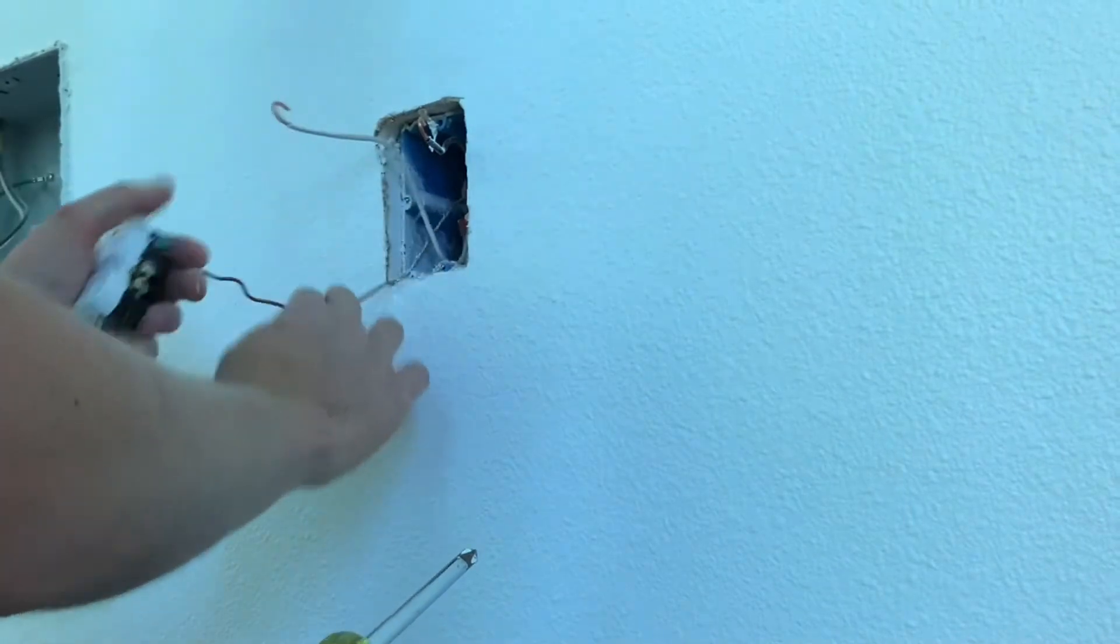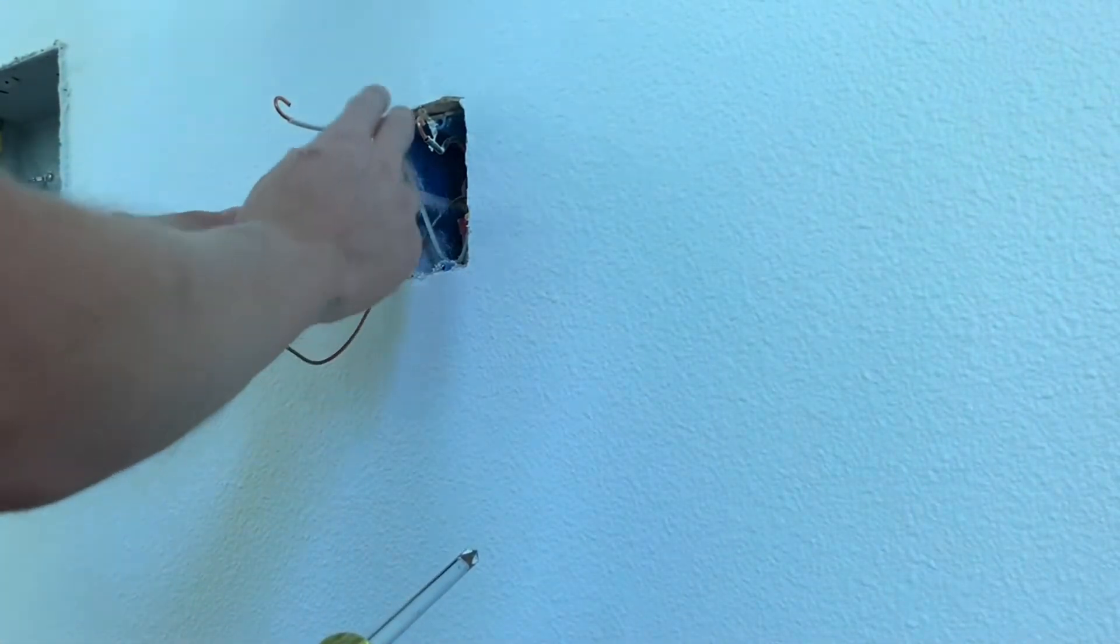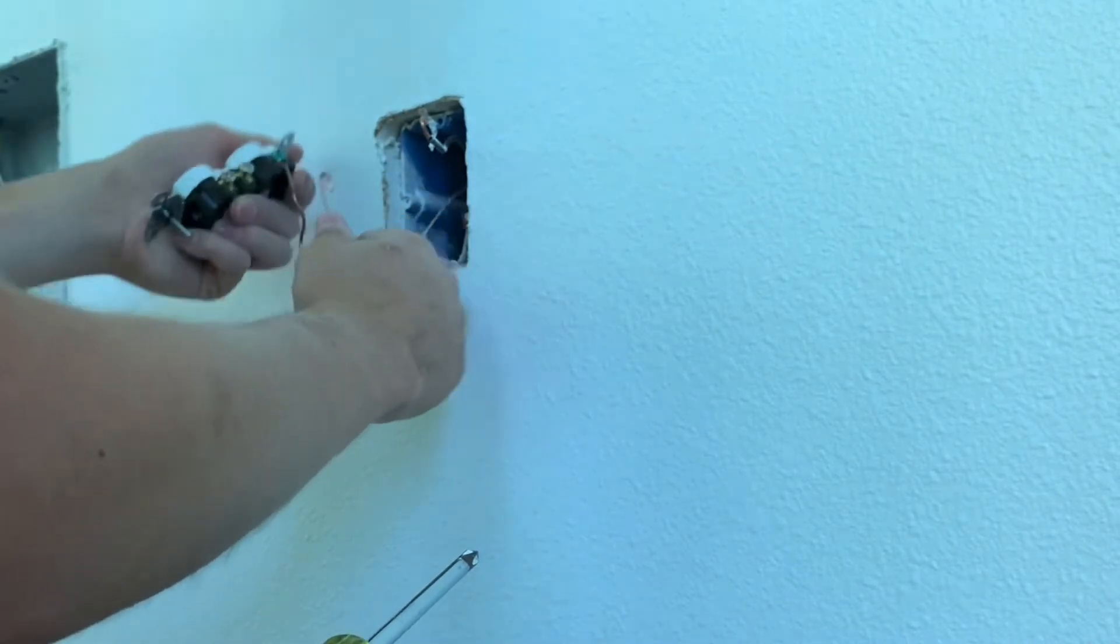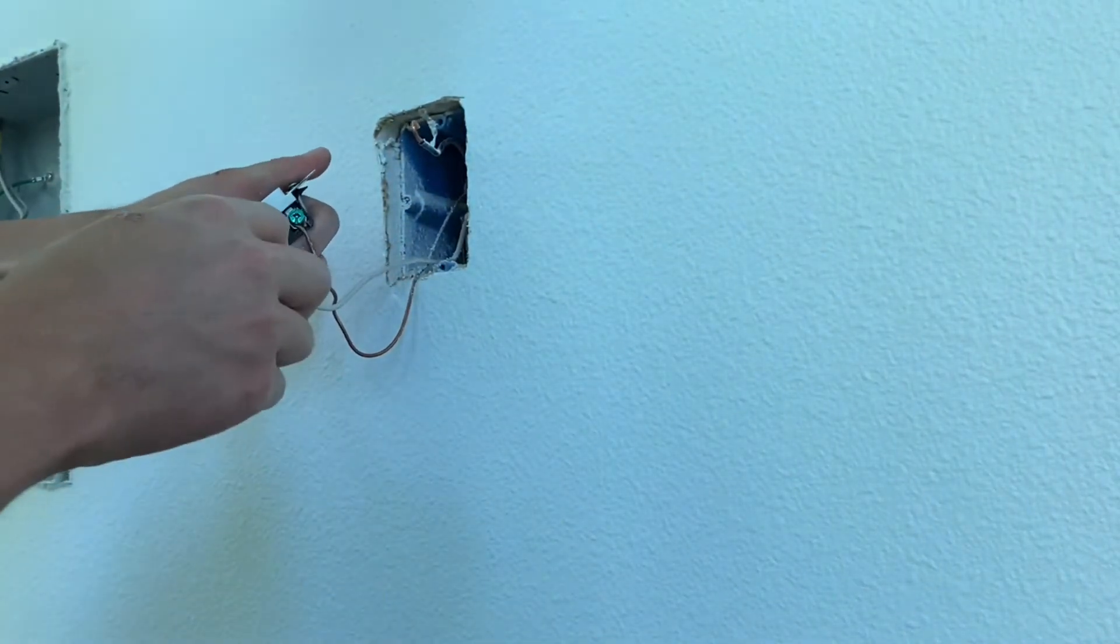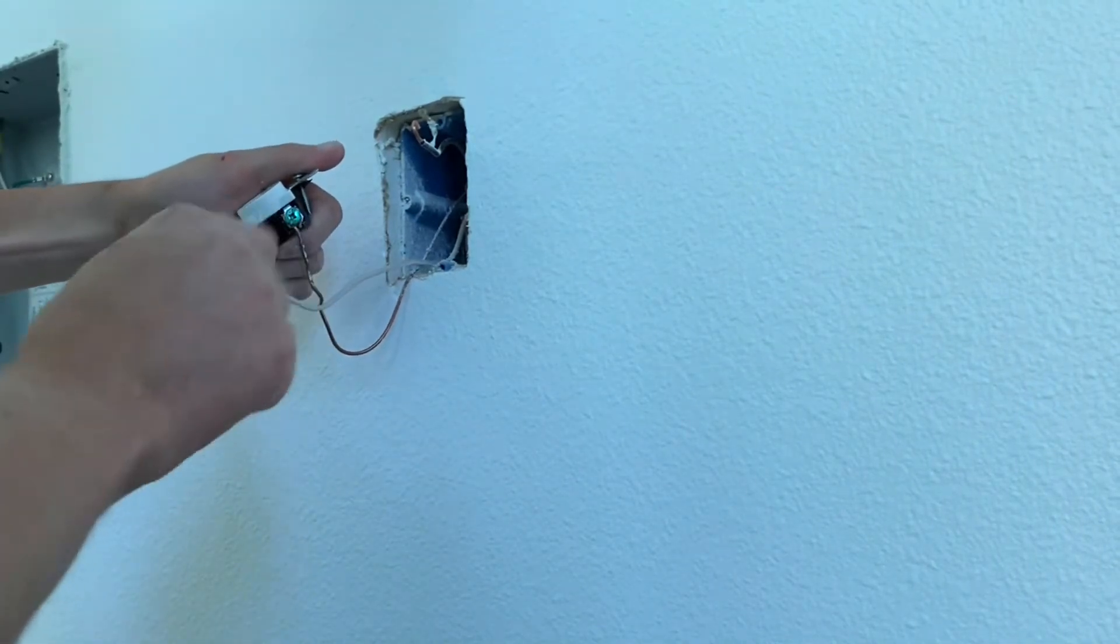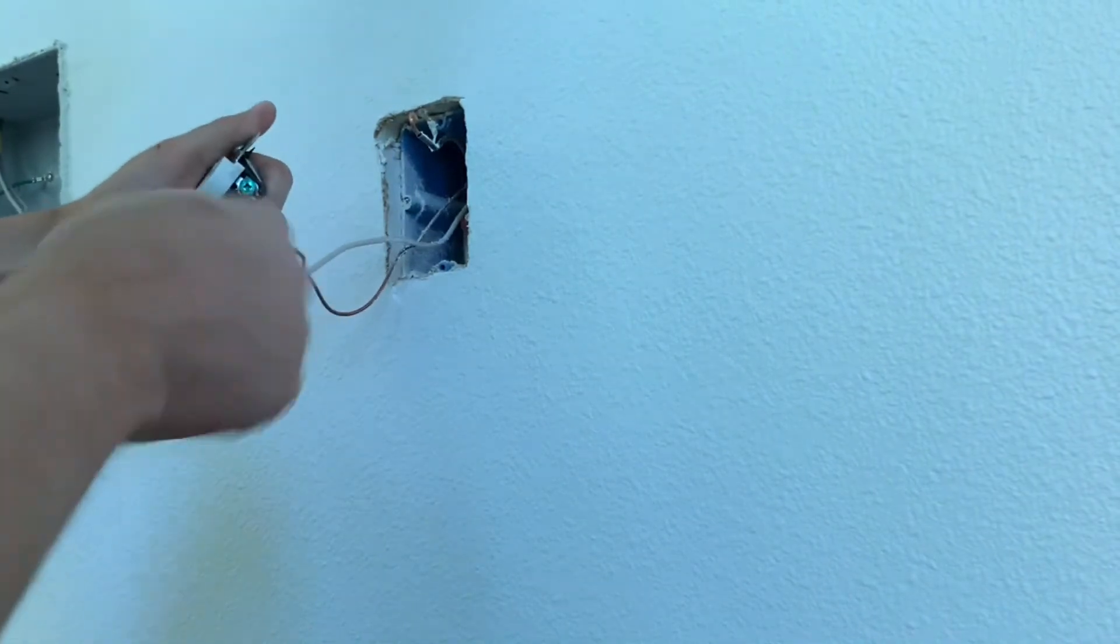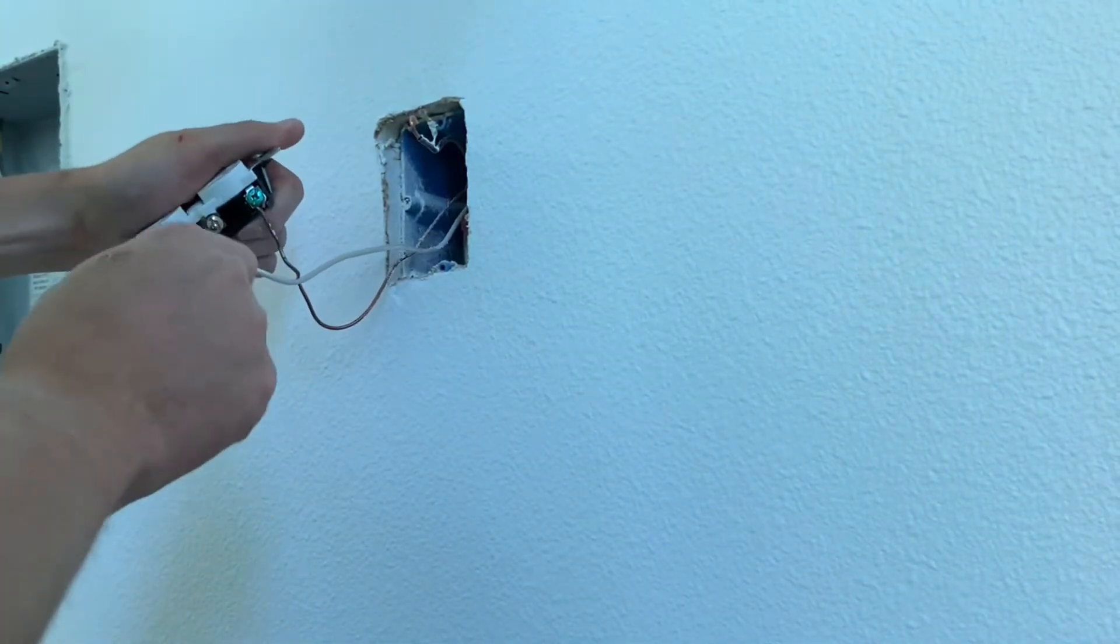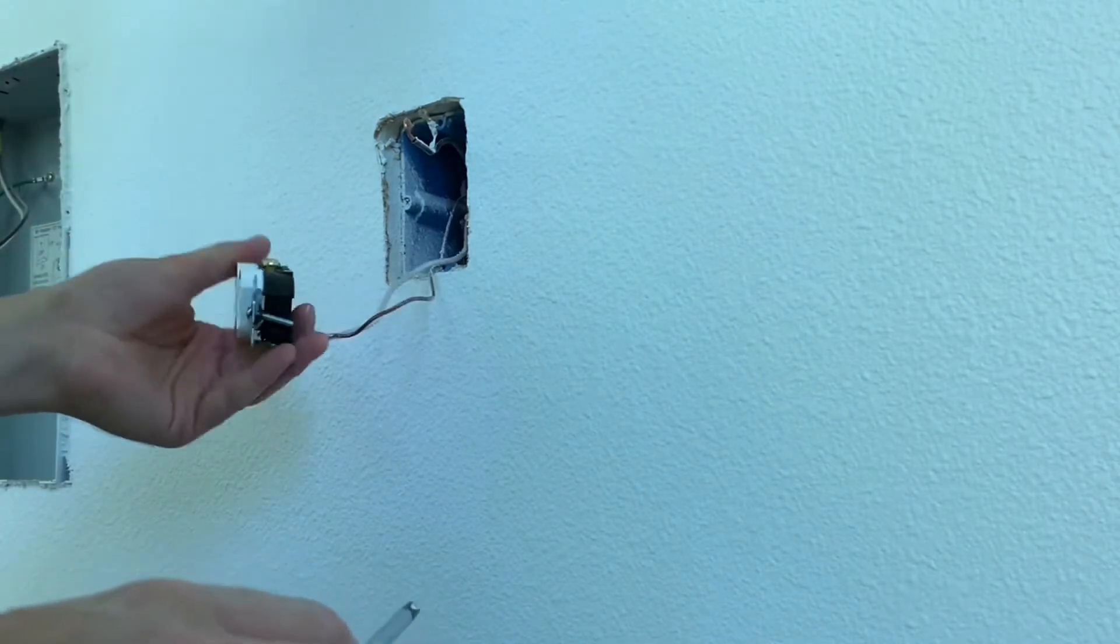Then you're going to want to go over to your neutral. So the ground, the green wire or the bare wire, goes in the green screw. Your white or neutral wire goes to the silver screw on the same side as the ground. Once again, you're going to hook that to the right and make sure the wires hook to the right so it tightens down and not loosens.